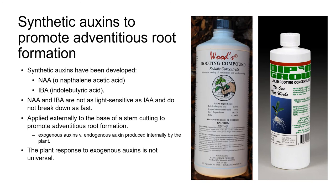Not long after auxins were recognized as plant hormones, two synthetic auxins were developed. One was NAA, naphthalene acetic acid, and the second was a synthetic form of the naturally occurring IBA. These two synthetic auxins were found to be more effective than the naturally occurring IAA in promoting adventitious root formation. They also have the advantages of not being as light sensitive as IAA and they don't break down as fast. In propagation, synthetic auxins are applied to cuttings to promote adventitious root formation, and are also sometimes used in layering techniques.